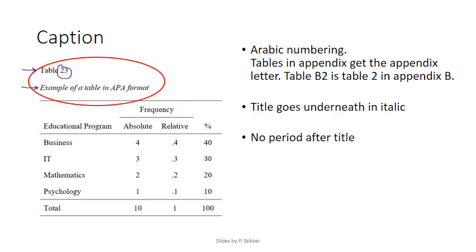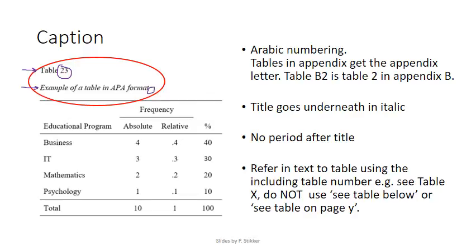Note that there is no period after the title. You should, in the text somewhere above the table, refer to it using simply 'Table' and then the number. Do not use things like 'see table below' or 'see table on page X.' Simply say, for example, 'as can be seen from Table 23.'